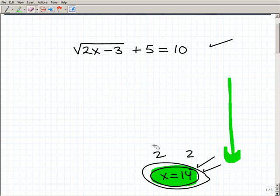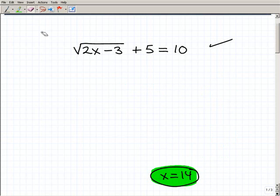I'm going to go ahead and erase all this. So x equals 14 looks like our solution. So let's go ahead and plug it in to our original statement here. So that would be 2, x is 14 right here, minus 3 plus 5 equals 10.